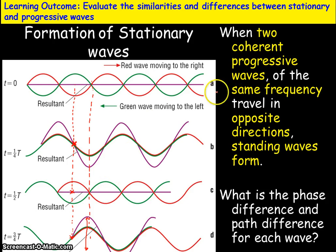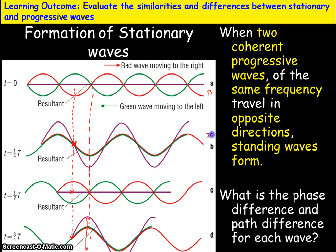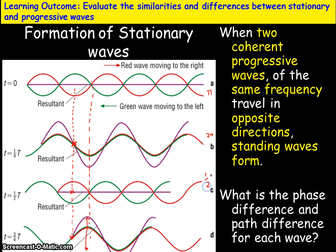The phase difference and path difference for each of these should be recognisable. The phase difference is π for destructive interference and 2π for constructive interference. In terms of lambda, destructive interference occurs at half-values of lambda, and constructive interference at whole values of lambda.